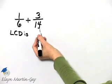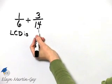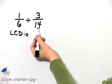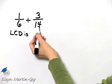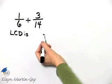Does 6 divide into 14? No. So 14 is not the LCD. What is 14 times 2? That is 28. Now I know 14 goes into 28. Does 6 go into 28 evenly? Well the answer is no.